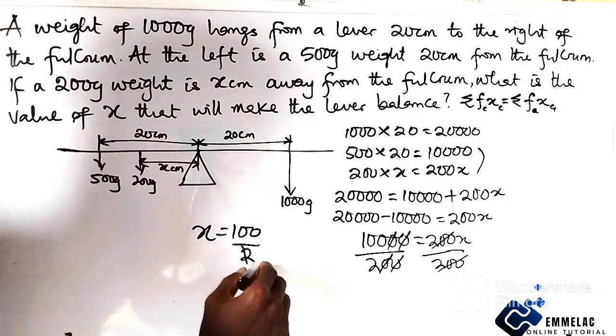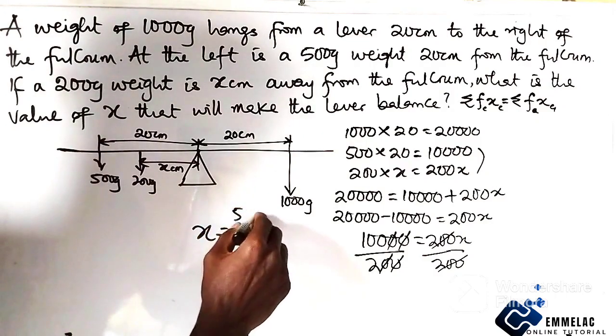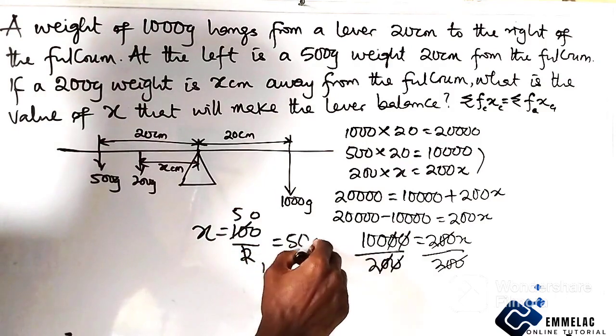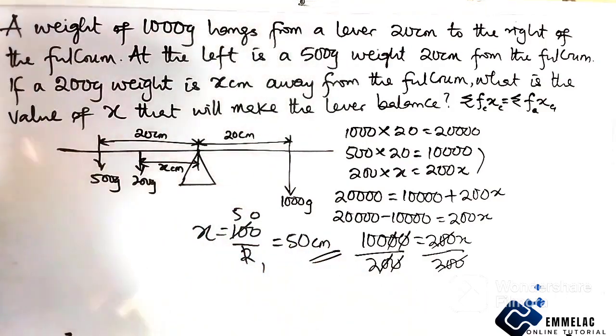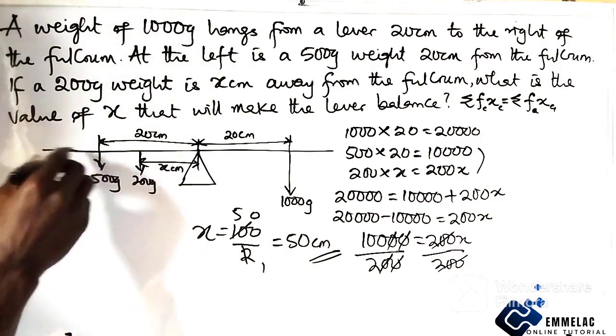So our distance away from the fulcrum is 50 centimeters. So which most likely this should be around here, 200. So from here to here gives us 50 centimeters.